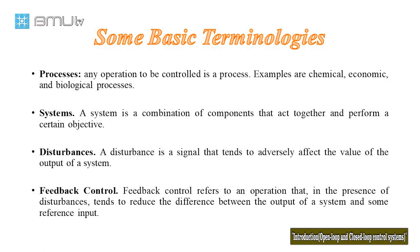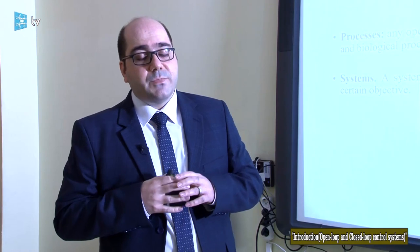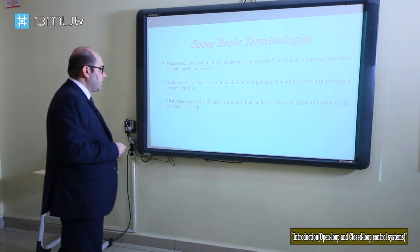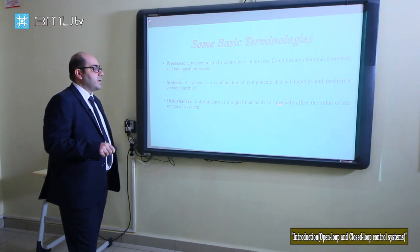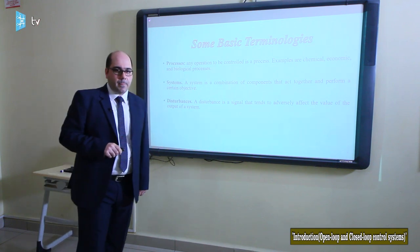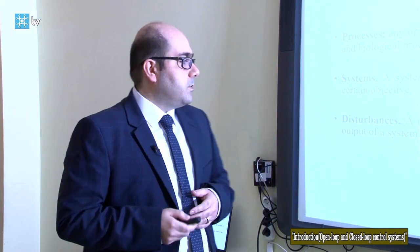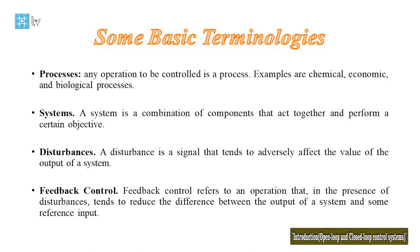A system is a combination of components that act together and perform a certain objective. Another important term is disturbance: a disturbance is a signal that tends to adversely affect the value of the output of the system. Noise applied to the system that affects the output is called a disturbance.